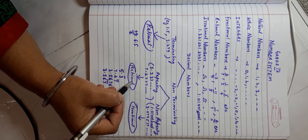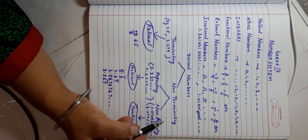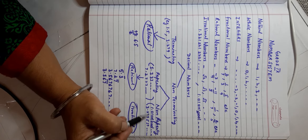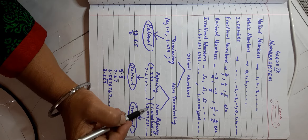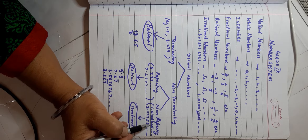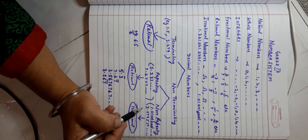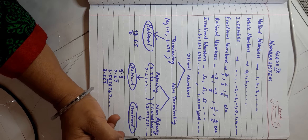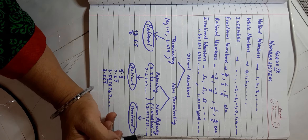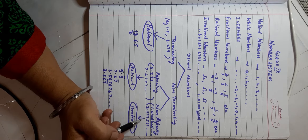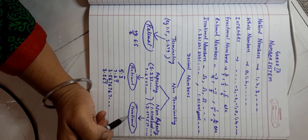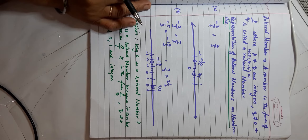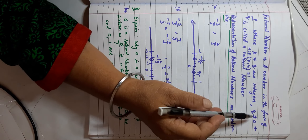Non-terminating non-repeating decimals are ones that never end and do not repeat. For example, 1.0100100001... or 3.279539..., where the rest of the digits are unpredictable and can be any number. They never end and never repeat. Such numbers we name as irrational numbers.